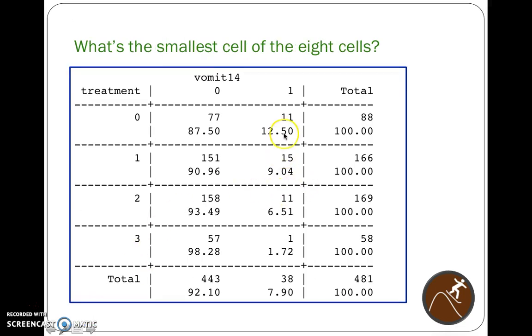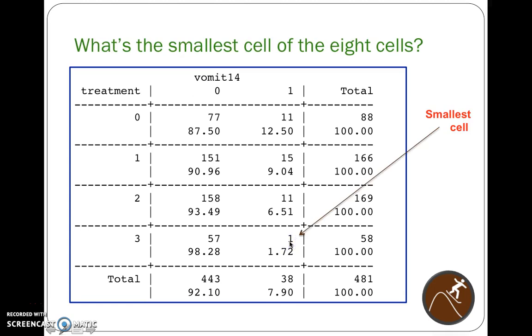So again, of these eight cells, 77, 11, 151, 15, 158, 11, 57, and 1, which of these cells is the smallest? And you should see number 1 is the smallest. And because it's the smallest, should we use a chi-square test or a Fisher exact test? So hopefully you know to choose the exact test.